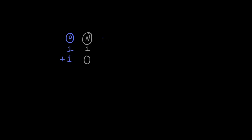We also have electrons in the atom. Electrons have a much, much smaller relative mass — the relative mass of electrons relative to protons is one over two thousand — so a lot smaller than the mass of protons. And they have a relative charge of minus one, so they have a negative charge.